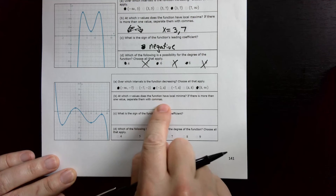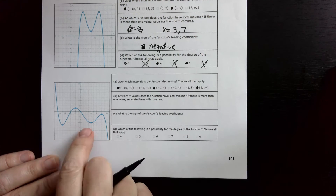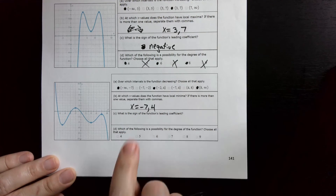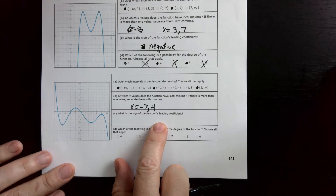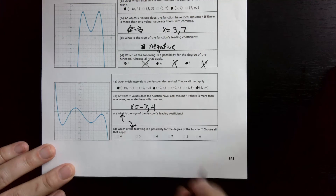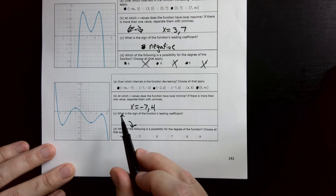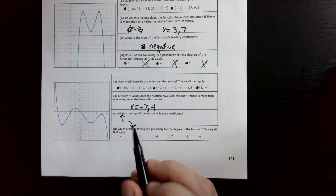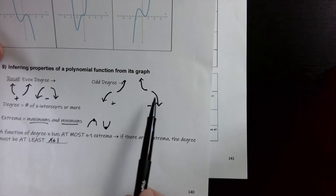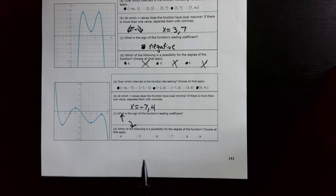At which x-values does the function have a local minima? Those occur at x equals negative 7 and x equals 4. What is the sign of the leading coefficient? The end behavior shows it going down on the left and up on the right — wait, actually it's going down on both ends in an odd pattern. This is an odd-degree function with a negative leading coefficient.